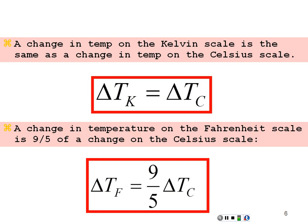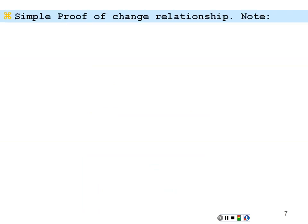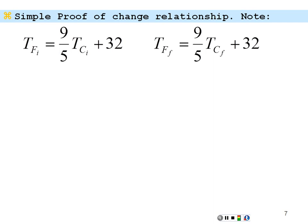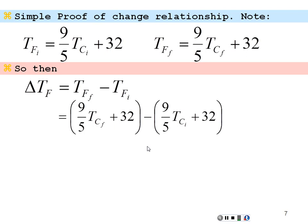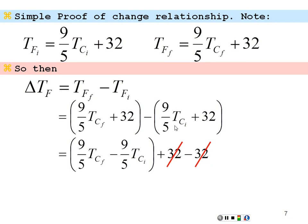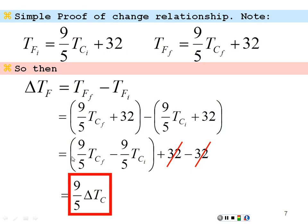These are very useful formulas. Here's a proof of this change relationship. If the temperature in Fahrenheit initially equals nine-fifths times the temperature in Celsius initially plus 32, and the same for the final temperature, then the change in temperature in Fahrenheit equals nine-fifths temperature Celsius final plus 32 minus nine-fifths temperature Celsius initial plus 32. The 32s cancel out, and we have nine-fifths times the change in temperature Celsius. So the change in temperature is easily converted between these temperature systems.